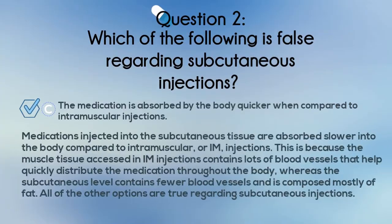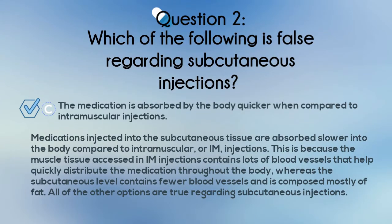The correct answer is C. Medications injected into the subcutaneous tissue are absorbed slower into the body compared to intramuscular or IM injections. This is because the muscle tissue accessed in IM injections contains lots of blood vessels that help quickly distribute the medication throughout the body, whereas the subcutaneous level contains fewer blood vessels and is composed mostly of fat. All the other options are true regarding subcutaneous injections.